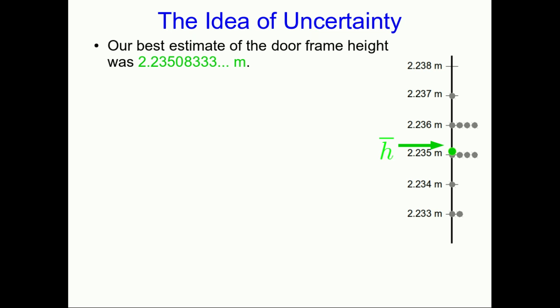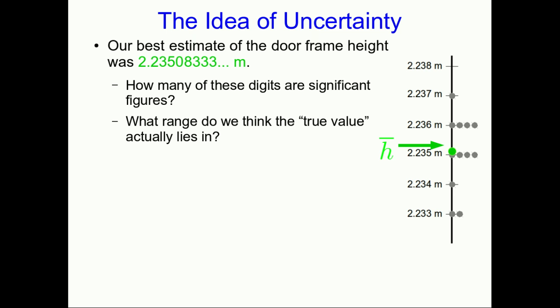There will again be an issue of how many of those digits are actually significant figures. I have added our best estimate and I've called it h with a line over top and we often do that. We indicate that something is a mean by putting a line over top of it. Don't confuse that with a vector symbol which is an arrow. We have this best estimate but I hope you don't believe that we think the door frame is exactly 2.2350833333333333 meters. No, if we were to redo these measurements all again we would presumably come up with a slightly different answer.